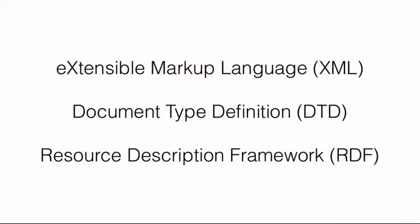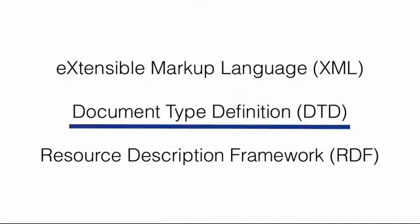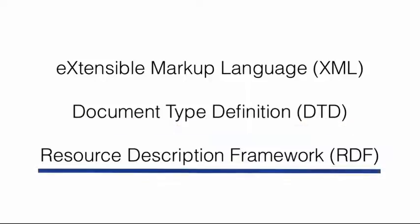In order to build a metadata schema, there are three technologies you need to be able to use. First is XML, the Extensible Markup Language. Second are Document Type Definitions, or DTDs, which are also XML. And the third is the Resource Description Framework, which is also XML. We'll get into those three things in more depth as we move along through this unit.